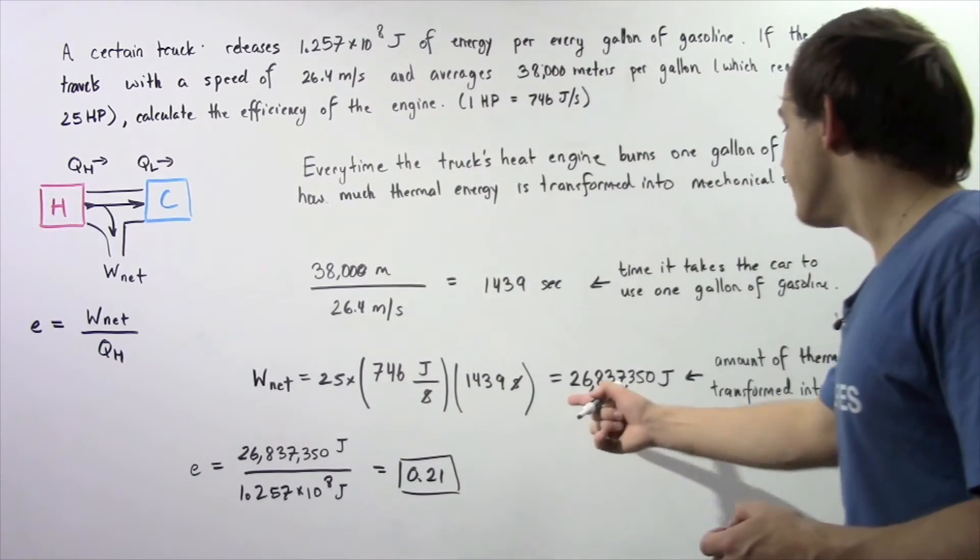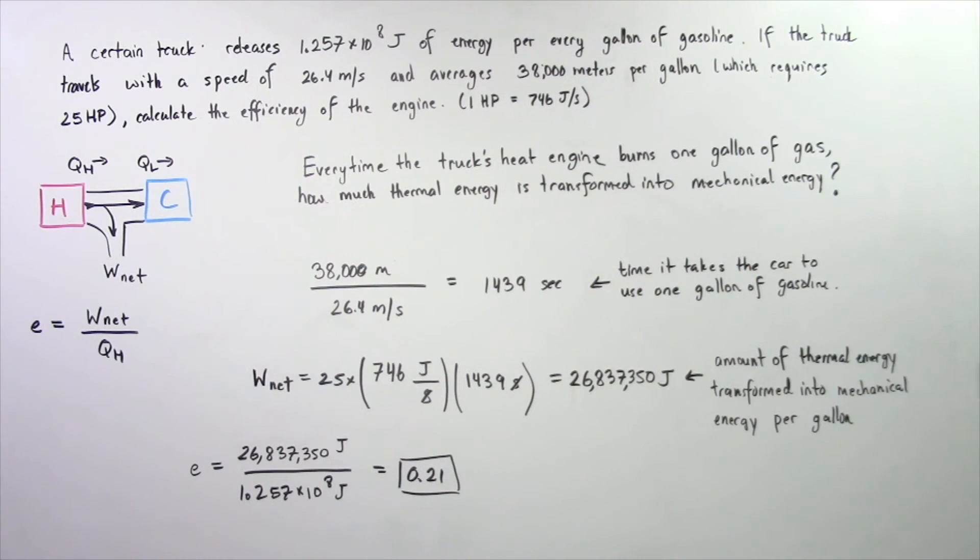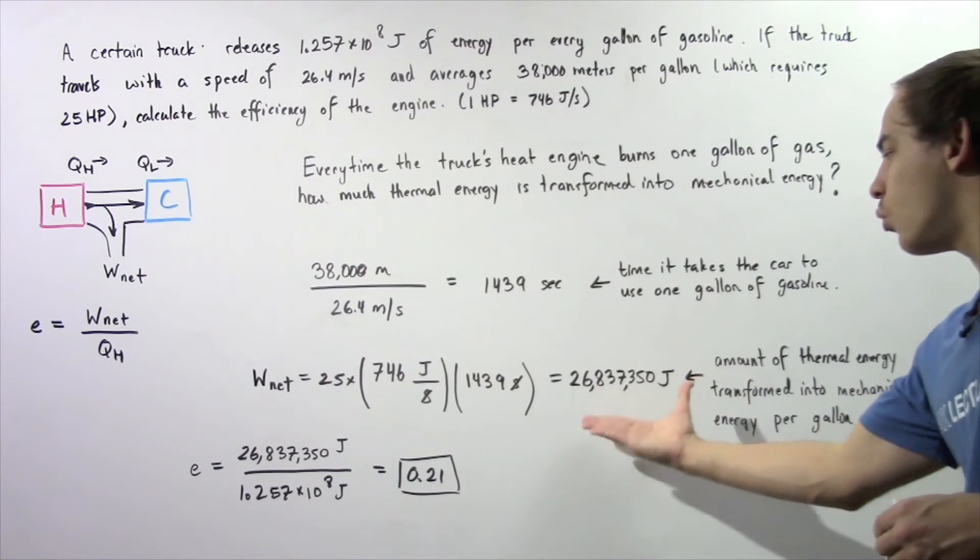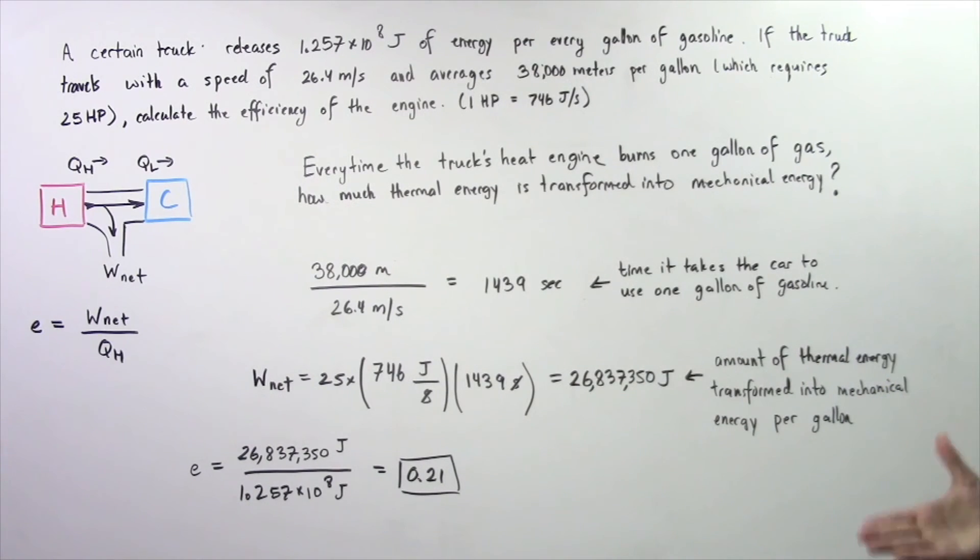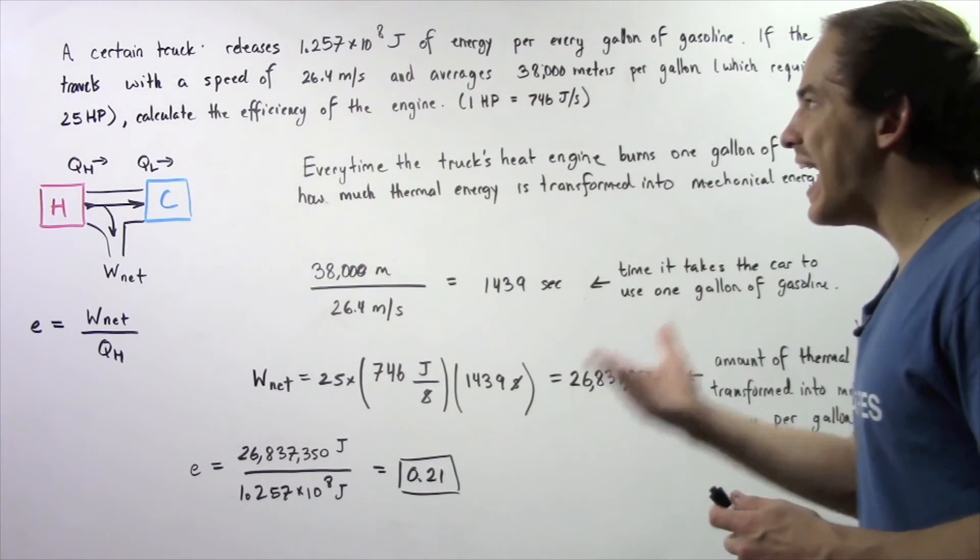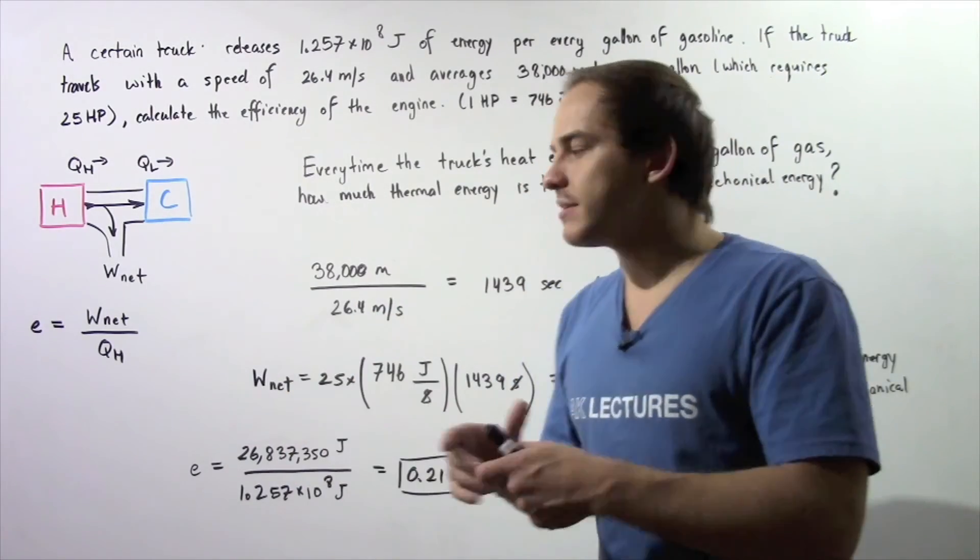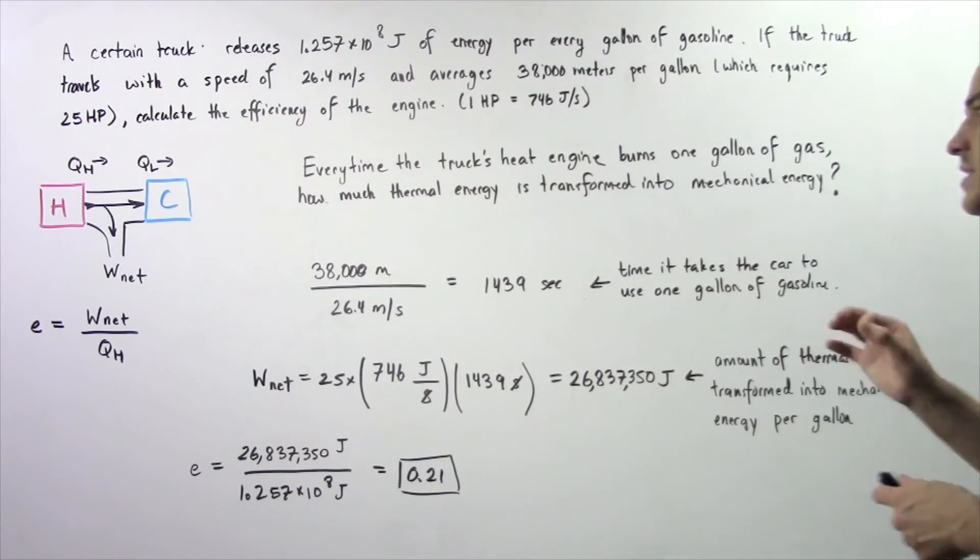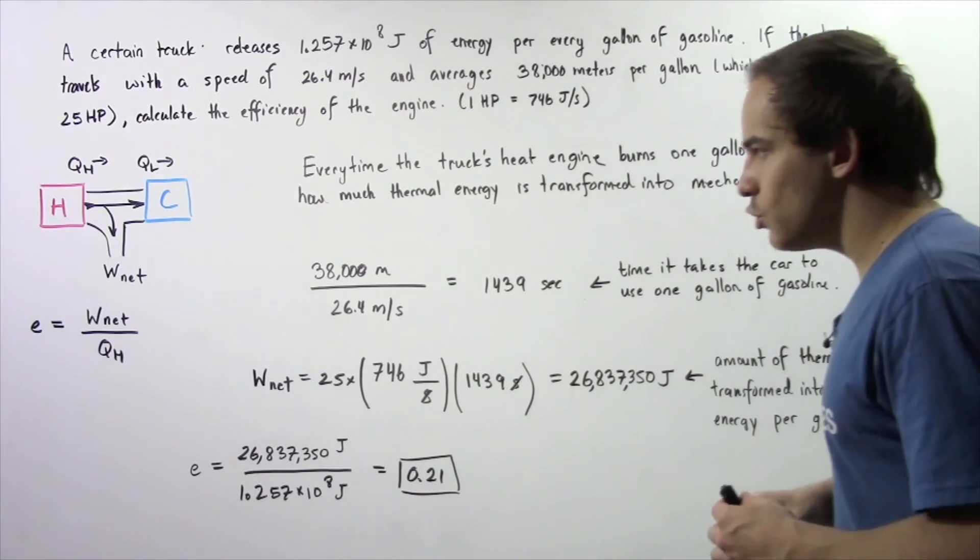And we're left with the following quantity. So 26,837,350 joules of energy. So this quantity essentially represents the amount of thermal energy that is converted into mechanical energy per every single gallon that the truck uses.